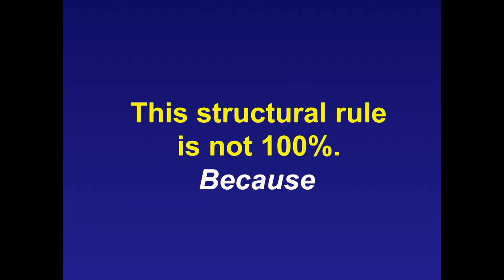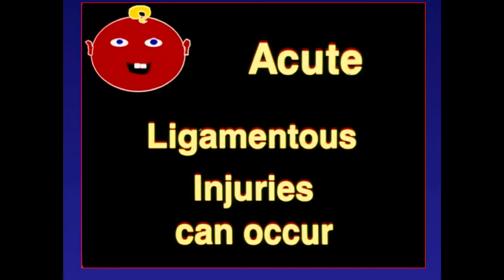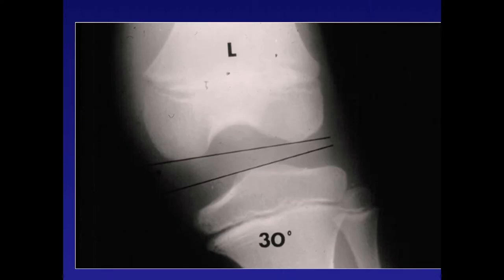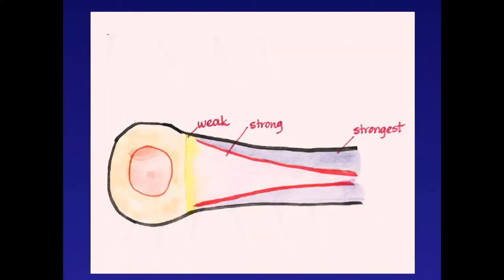By and large, injuries around joints usually result in physeal failure, but that's not 100% true—you can get ligamentous injuries, as in this six-year-old girl who had a rupture of her medial collateral ligament.